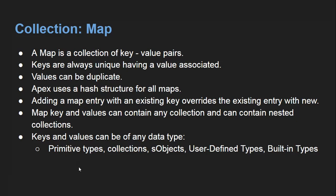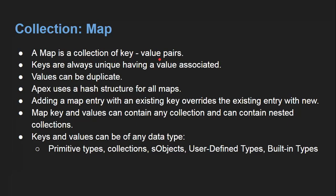A map is a collection of key-value pair. In my previous video, I demonstrated you about list and set. In list and set, we can store only values, whereas in map we can store two things — one is key and another one is value. So this is a pair; together they form a single entity. Keys are always unique having a value associated, but values can be duplicate.